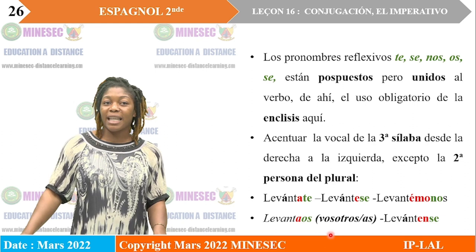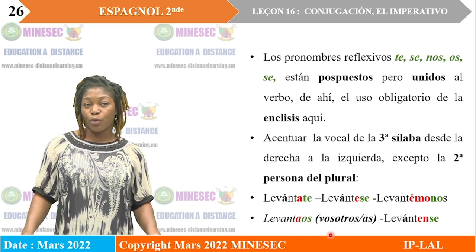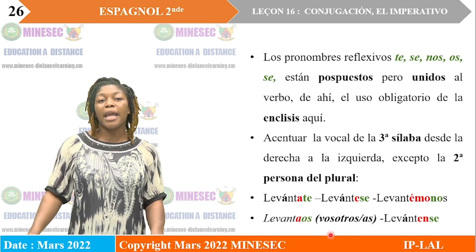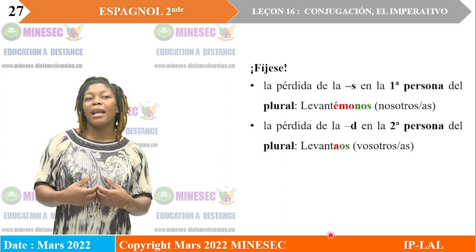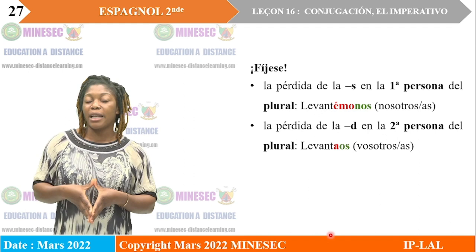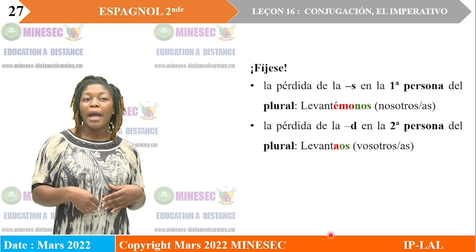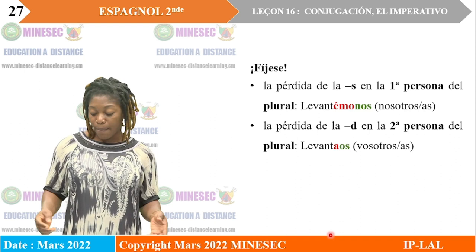De ahí el uso obligatorio de la tilde. Los pronombres vienen después del verbo y están unidos a él. La tilde acentúa la vocal de la tercera sílaba desde la derecha a la izquierda: levántate, levántese, levantémonos, levantaos vosotros, levántense. Hay que fijarse sobre la pérdida de la S en la primera persona del plural: levantémonos, no 'levantémonos'. Y la pérdida de la D en la segunda persona del plural: levantaos.